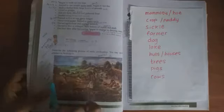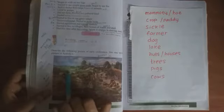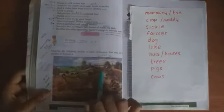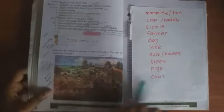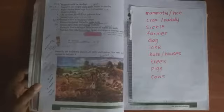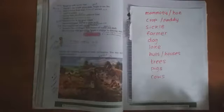And who is this person? We can call him a farmer. And a dog is there. A woman is there. Lake. Here. There is a lake. Huts or houses are there. Trees are there. Here. There is a pig. Here. And cows are also there. So, you can use these words also when you are writing.